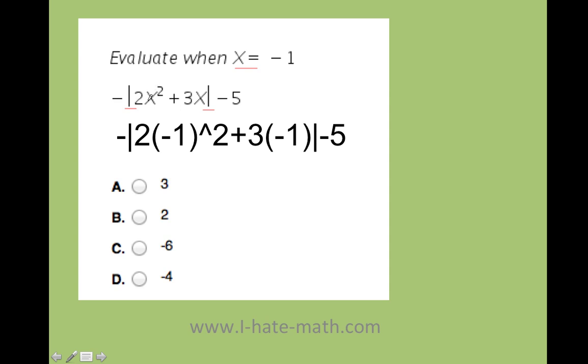So I have 2 times negative 1 squared plus 3 times negative 1. So let's go ahead and take care of what is inside the absolute value.